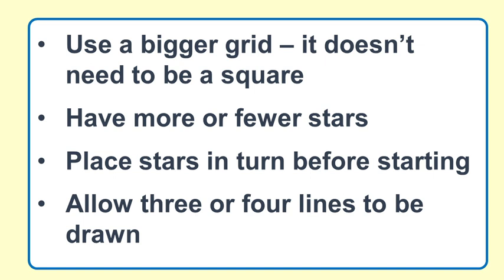When you're making a board, you could have the players take turns and putting the stars onto the board until you have the right number. And also in this particular variation, we only allowed up to two lines to be drawn. You could allow three or four lines to be drawn.